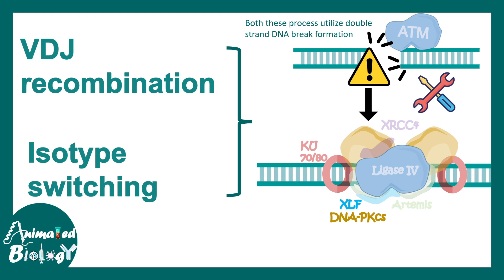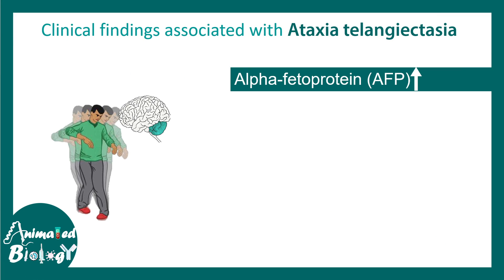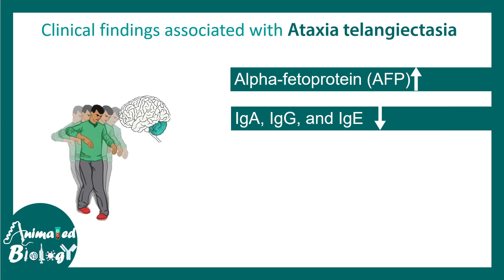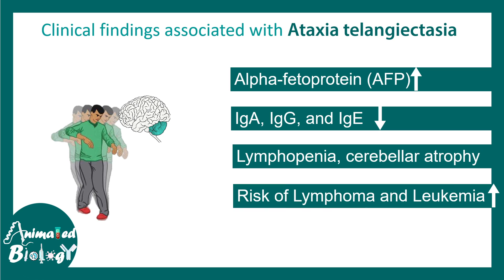That is why patients with Ataxia Telangiectasia have low levels of T cell and B cell count. In these patients there is a high level of alpha-fetoprotein, low levels of IgA, IgG, or IgE because isotype switching doesn't happen. There is also lymphopenia, cerebellar atrophy and developmental defects of the cerebellum, and an increased risk of lymphoma and leukemia in these patients.